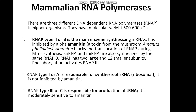RNA polymerase has two large and 12 small subunits. Phosphorylation activates RNA polymerase 2. RNA polymerase type A, or 1, is responsible for synthesis of ribosomal RNA and is not inhibited by amanitin. RNA polymerase type 3, or C, is responsible for production of transfer RNA and is moderately sensitive to amanitin.